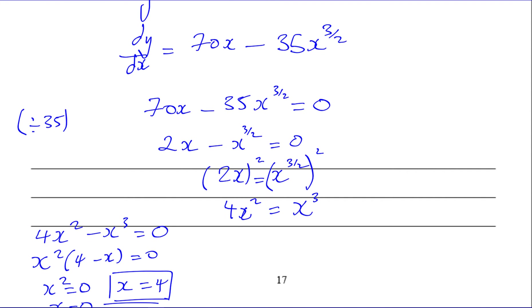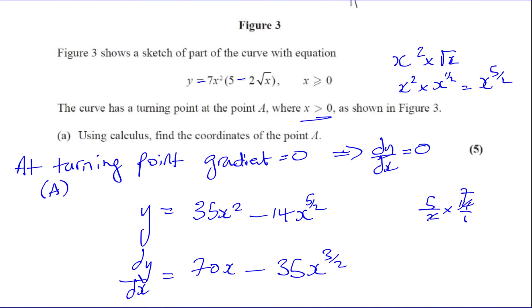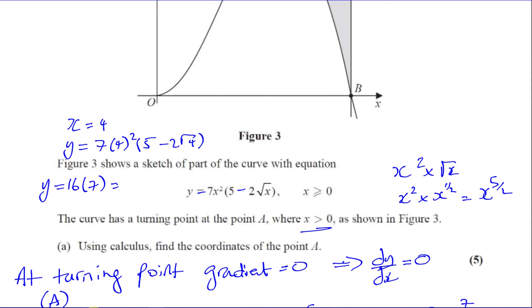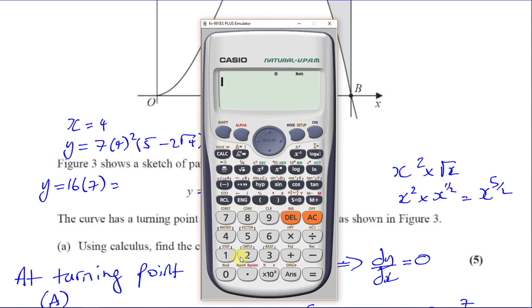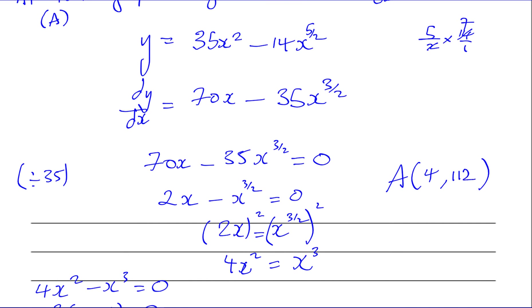The question asks for the coordinates of A, so we can't just write 4 — we have to find y. We put x equals 4 back into the original equation: y equals 7 times 4 squared times (5 minus 2 times root 4). That's 7 times 16 times (5 minus 4), which is 7 times 16 times 1, giving y equals 112. So the coordinates of A are (4, 112).